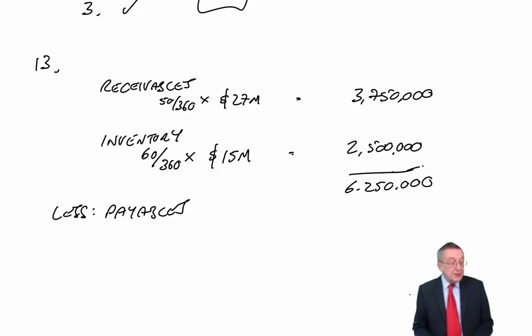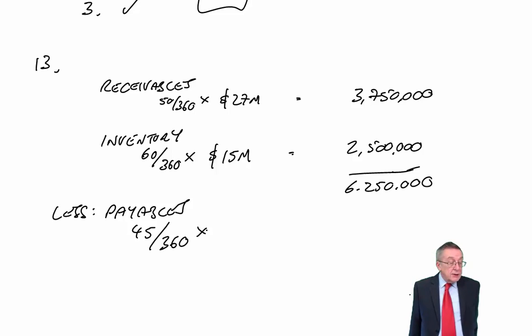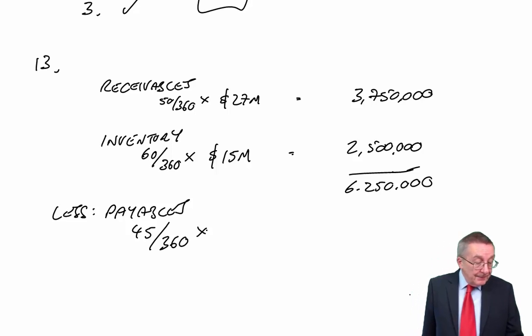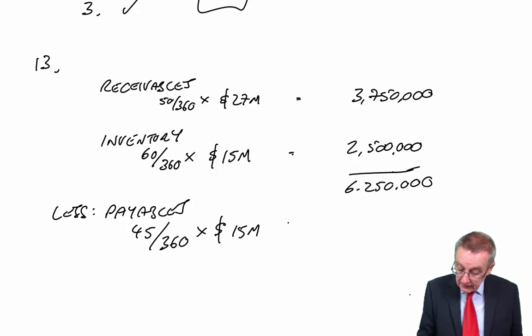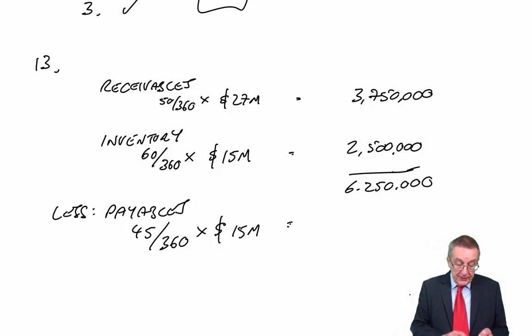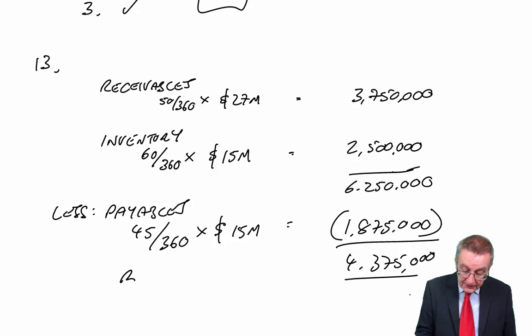For the net investment, subtract payables. Payables period is 45/360 days. Should really be that fraction of our purchases, but as it's very common, if we're not told what our purchases are, we've no choice but to use cost of sales. So 45/360 of 15 million, 1.875, which gives us a net investment of 4.375 million. Yes, the answer is B.